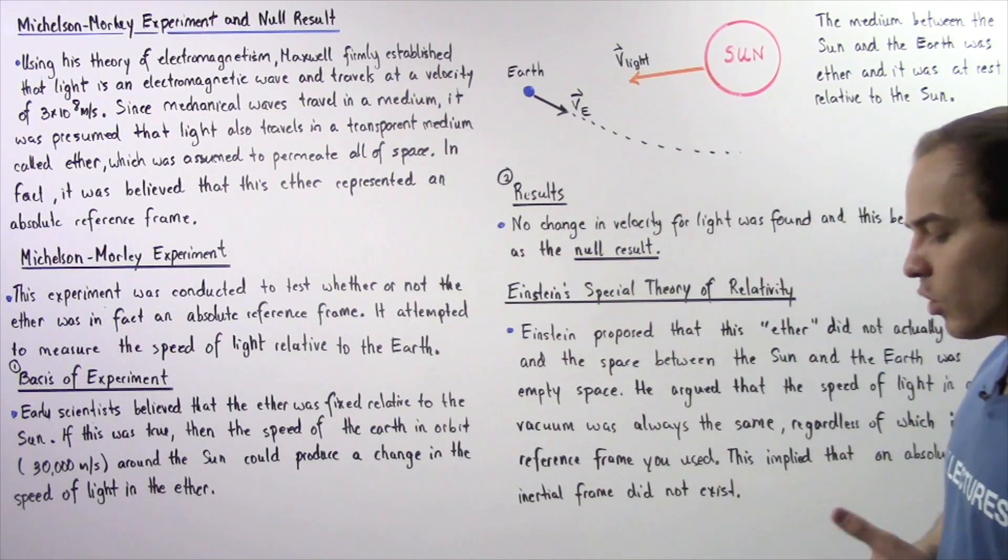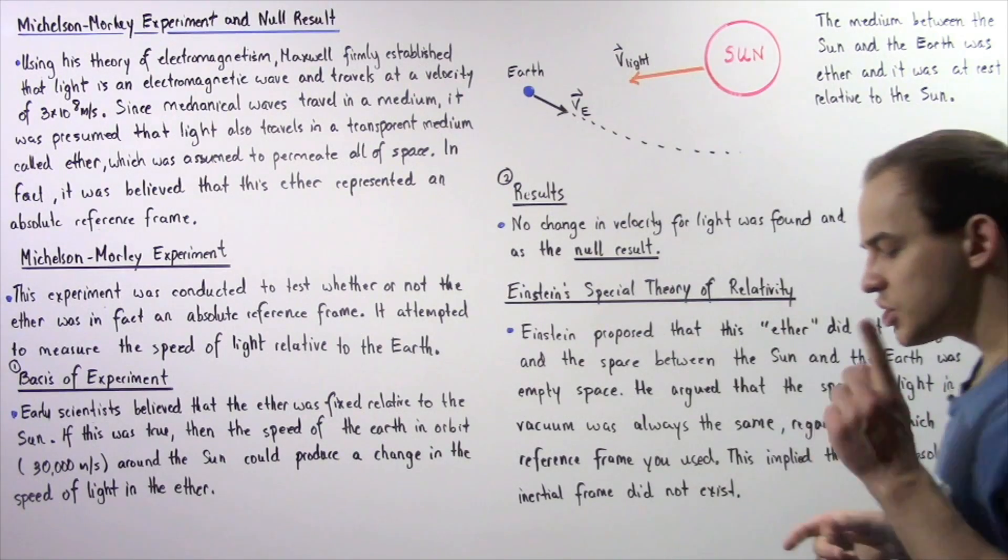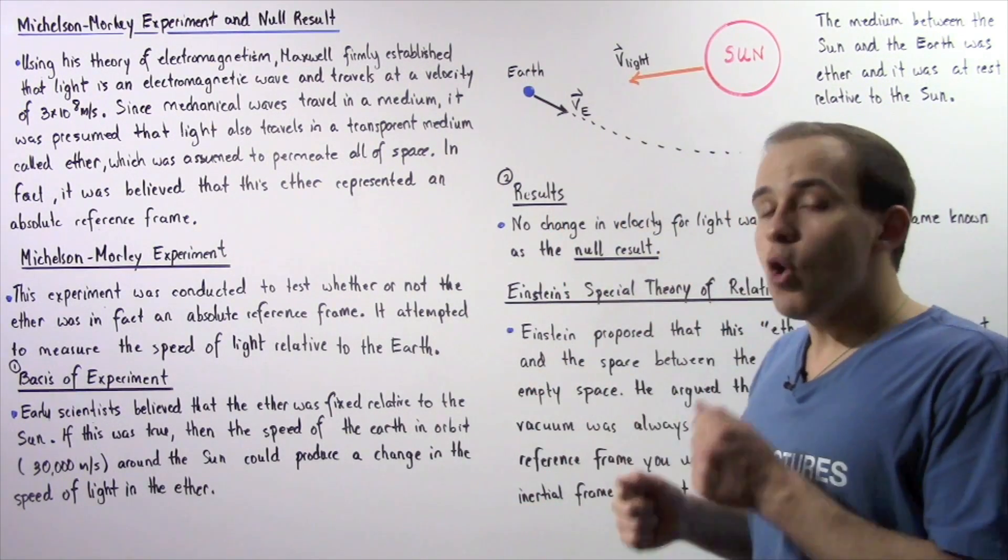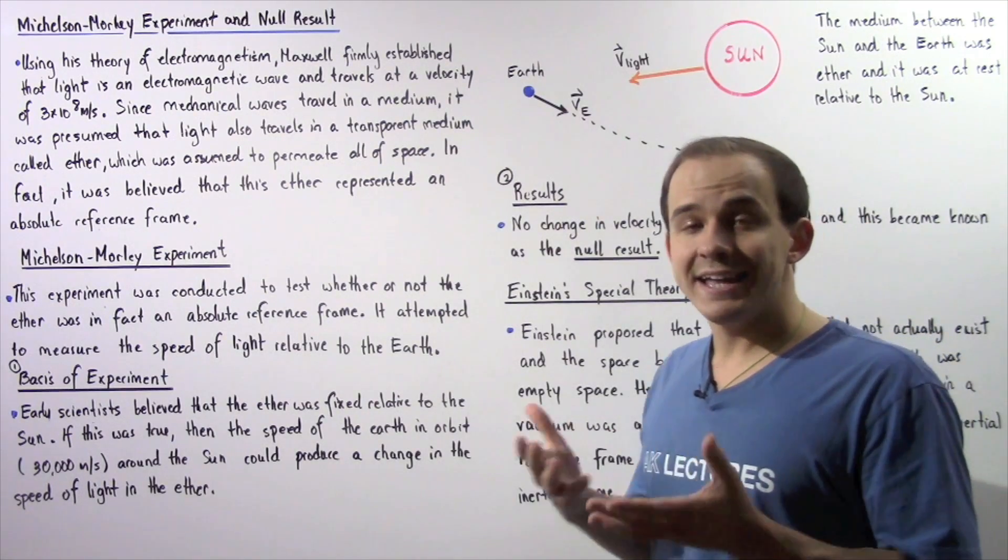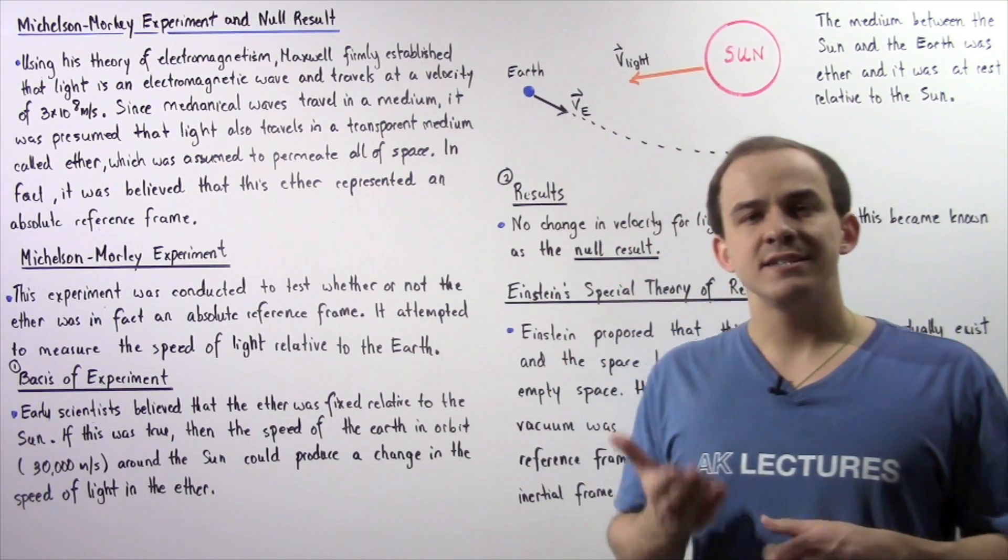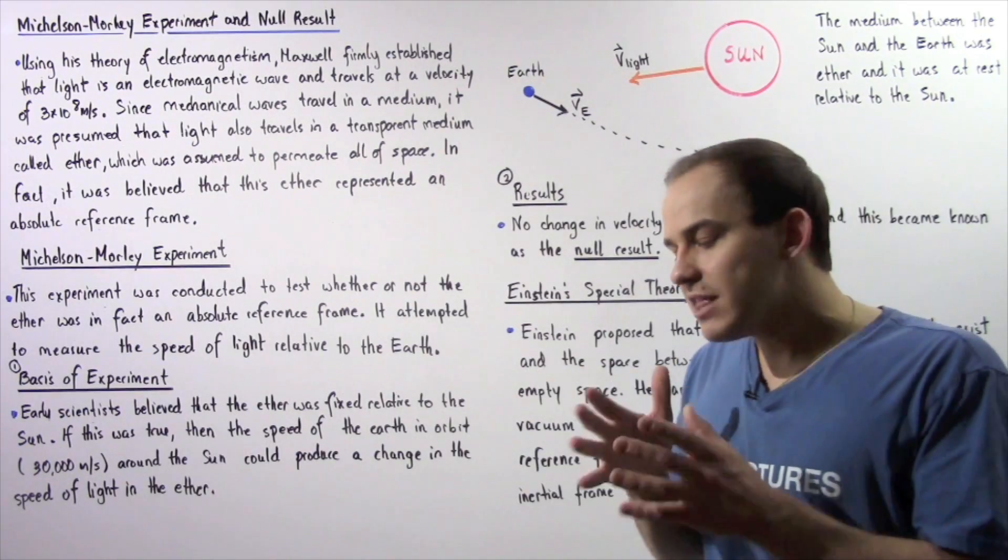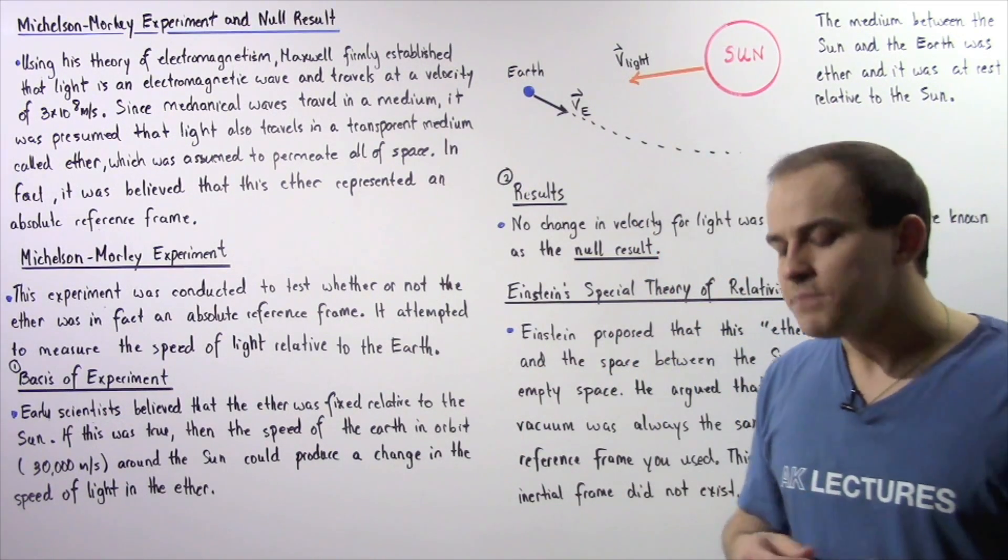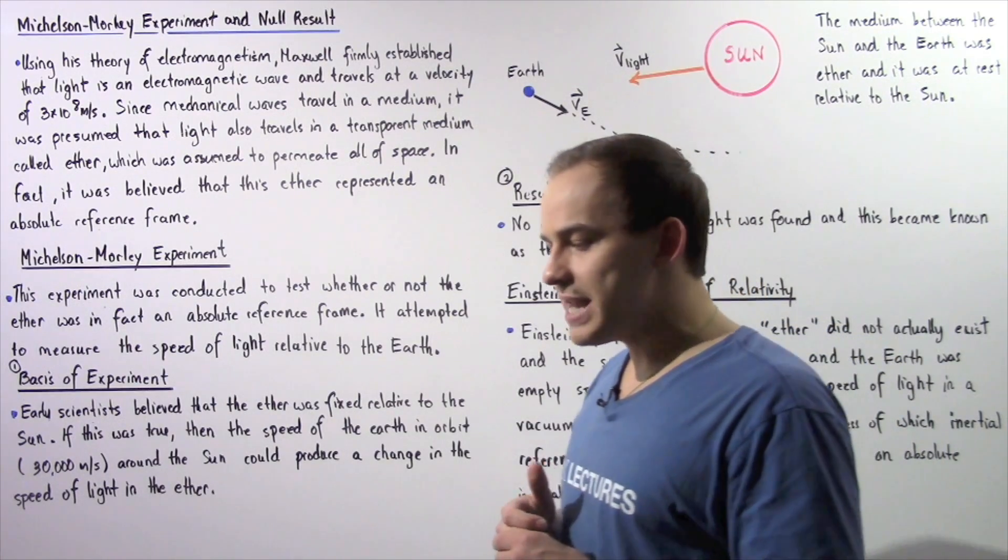So to see exactly what we mean, let's suppose we're moving on the highway inside a car with a velocity of 60 kilometers an hour, and the car right next to our car is moving with a velocity of 50 kilometers an hour.